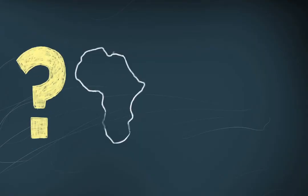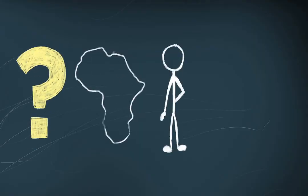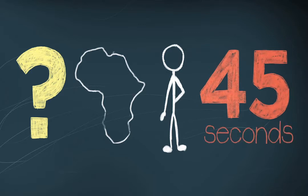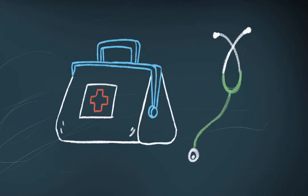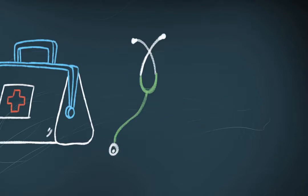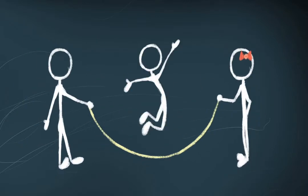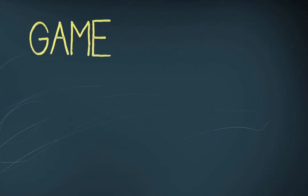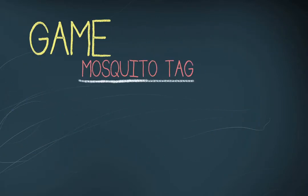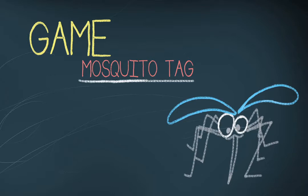Did you know that in Africa, a child dies every 45 seconds from malaria, even though it's a preventable and curable disease? In order to help those children, Right to Play invented a game called Mosquito Tag.